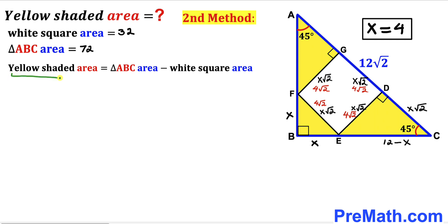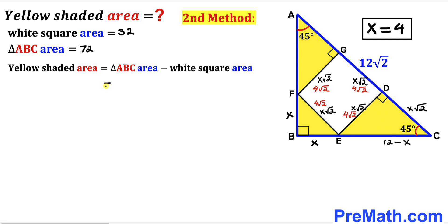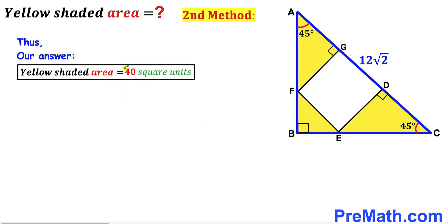For the final step: yellow shaded area = triangle ABC area − white square area = 72 − 32 = 40 square units. The area of the yellow shaded region is confirmed to be 40 square units by the second method as well. Thanks for watching and please don't forget to subscribe to my channel for more exciting videos!